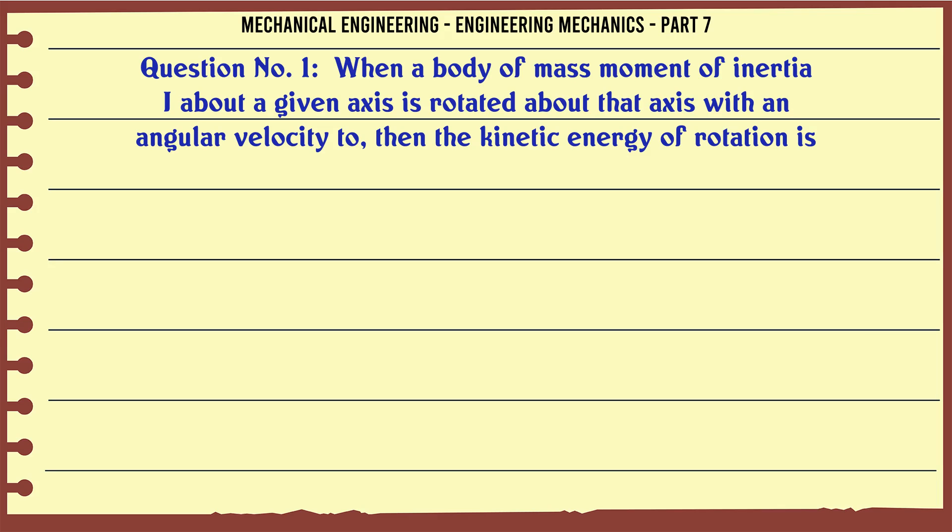When a body of mass moment of inertia I about a given axis is rotated about that axis with an angular velocity ω, then the kinetic energy of rotation is: Option A: I, Option B: I², Option C: 0.5 I, Option D: 0.5 I².